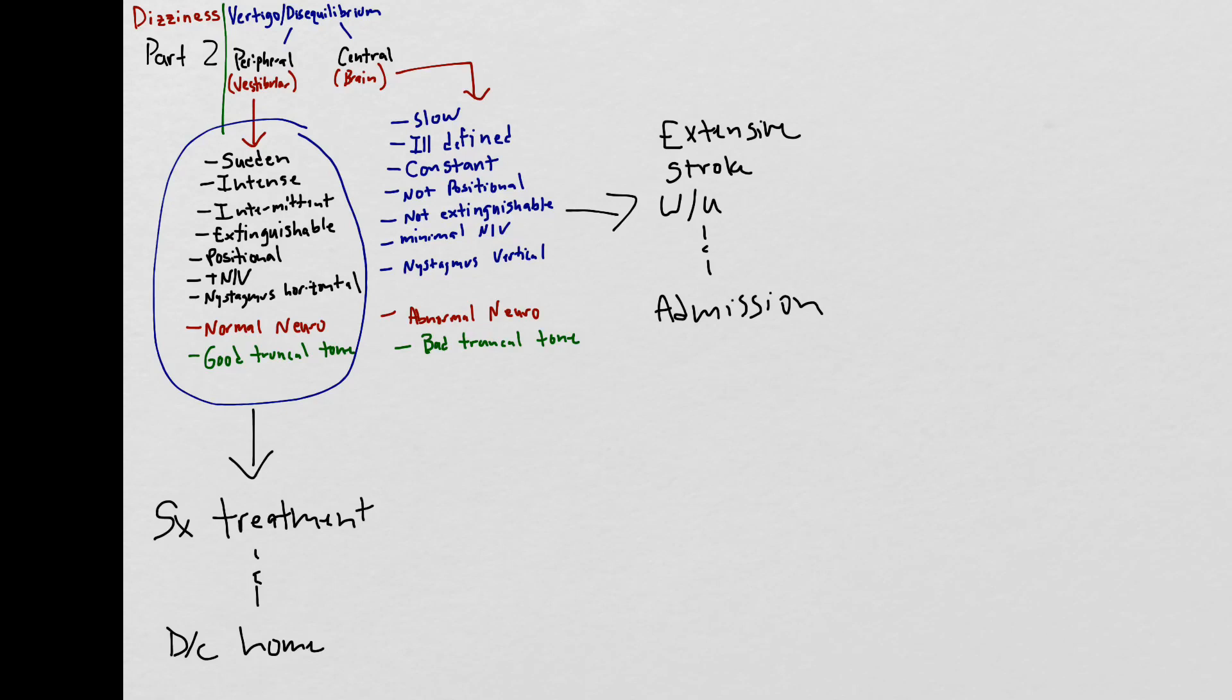Patients with a clear-cut peripheral vertigo syndrome get symptomatic treatment and are discharged home. Whereas those with central vertigo get an extensive stroke workup and are admitted to the hospital. And that's a big deal, big difference. In peripheral vertigo I don't really need labs or imaging it's all a clinical diagnosis. Whereas for central vertigo I'm getting labs, I'm getting an MRI, I'm talking to my consultant, the neurologist.